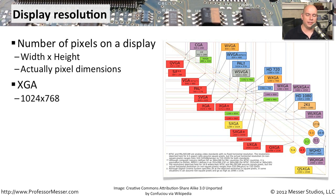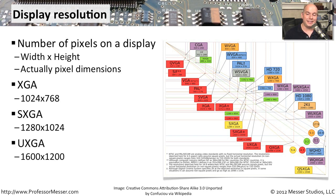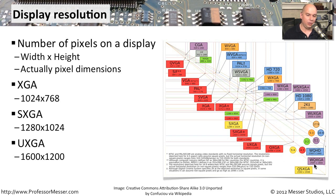For example, an XGA screen is 1024 pixels wide by 768 pixels high. For SXGA, it's 1280 by 1024. And UXGA means 1600 by 1200 pixels. For most purposes, you don't have to memorize all of these, but it's important to know how this has changed through the years. The early CGA displays were 320 by 200 pixels, compared to larger modern displays like WQXGA, which is 2560 pixels wide by 1600 pixels high.